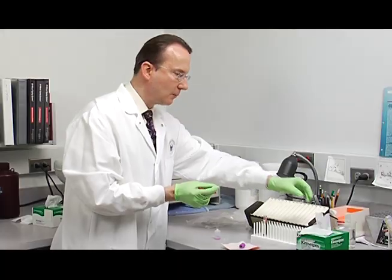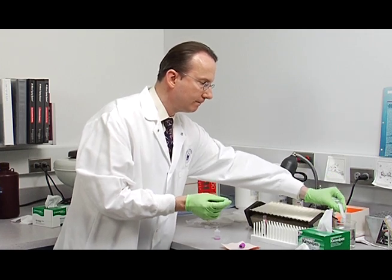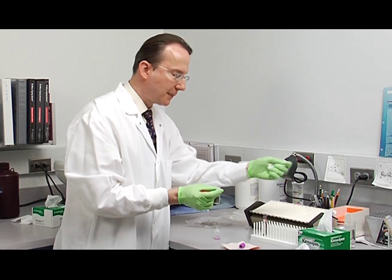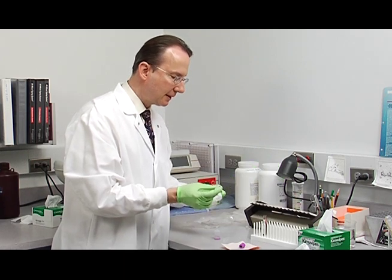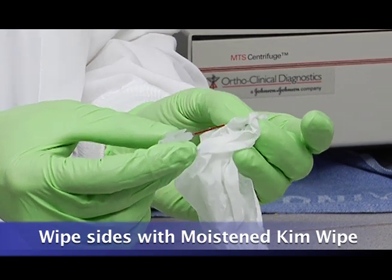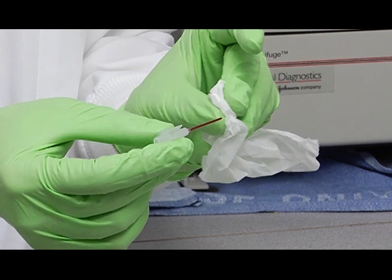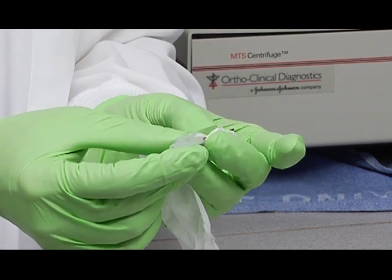Then with a moistened kim wipe, not sopping, just slightly moistened, wipe the blood off the outside of the capillary, just like this. Make sure you don't blot any out the tip this way. So the sides just like this.